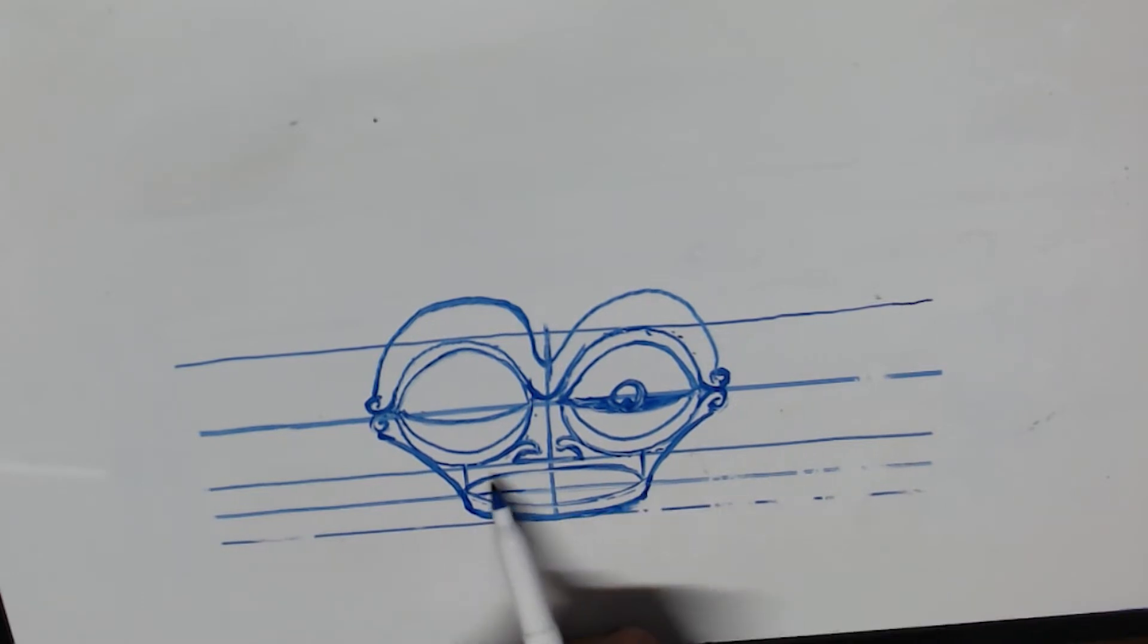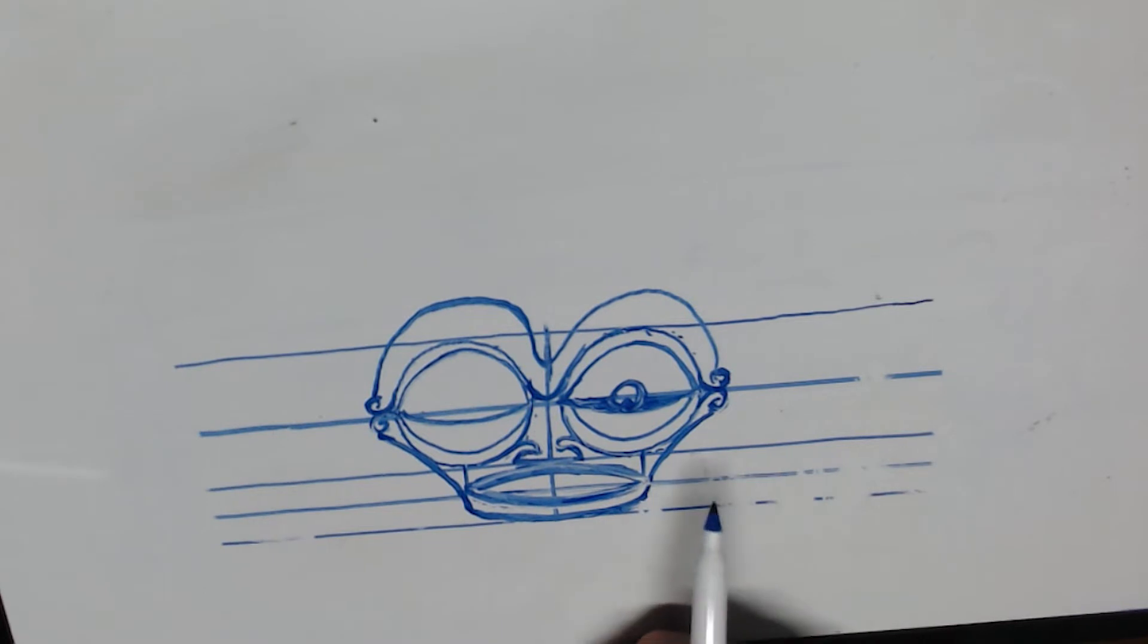And then usually the tiki has his tongue between his lips. So you usually see the lips over there. Sorry, it's a bit messy, but. No, I get it. It's hard on this board.